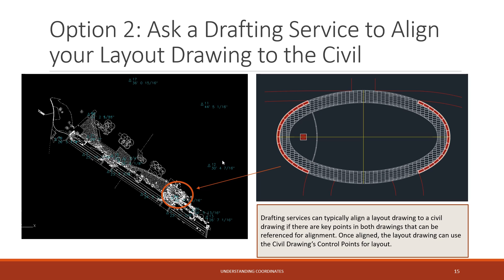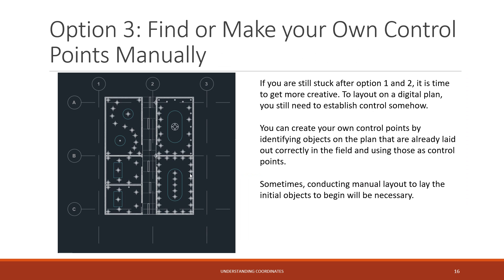Another option is to ask a drafting service to align your layout plan to the civil or site coordinate plan. You can take the layout plan and have them drag it over and align it accurately to the civil plan. You do need to make sure there are points or objects in both drawings that represent the alignment points. Talk to a drafting service — they can help you. It is possible to align a layout plan to a civil plan as long as you have connecting points on both sides indicating where they need to be aligned.